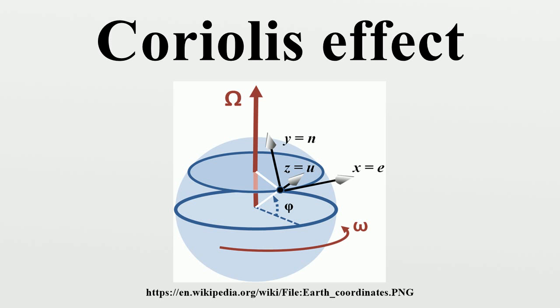A commonly encountered rotating reference frame is the Earth. The Coriolis effect is caused by the rotation of the Earth and the inertia of the mass experiencing the effect. Because the Earth completes only one rotation per day, the Coriolis force is quite small, and its effects generally become noticeable only for motions occurring over large distances and long periods of time, such as large-scale movement of air in the atmosphere or water in the ocean.